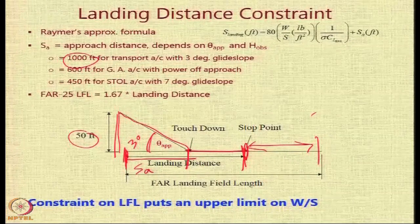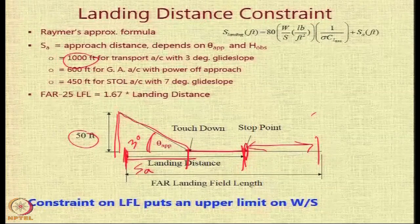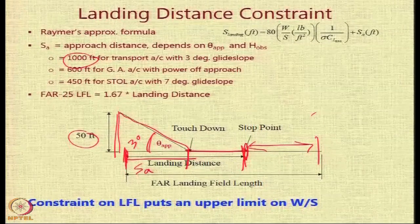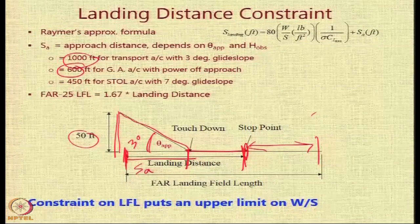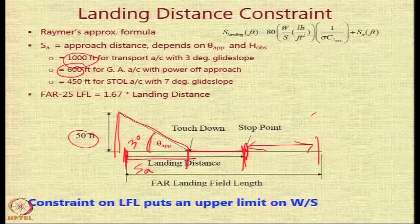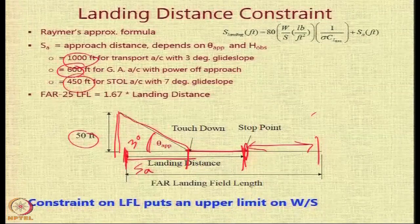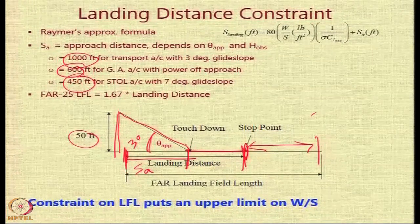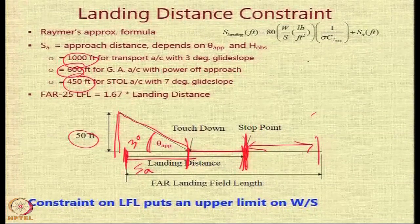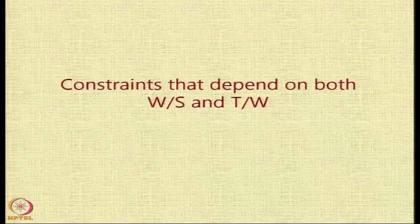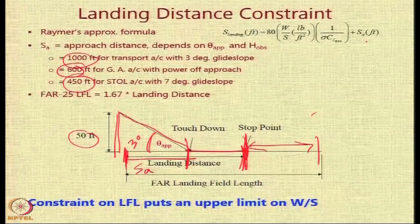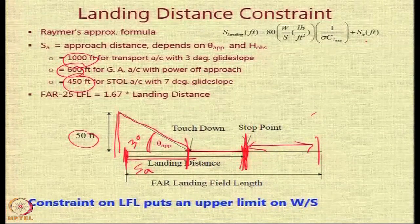For a general aviation aircraft using a powered approach, a larger approach angle θ leads to a shorter approach distance SA. For a STOL aircraft with a much larger glide slope of say 7 degrees, there is a further reduction in approach distance. So depending on the type of aircraft, the approach distance varies. The constraint on landing field length puts an upper limit on wing loading, just as the stall constraint does — we pick whichever is more critical.